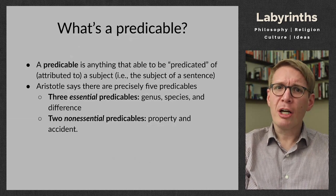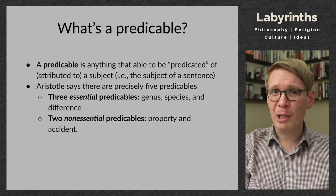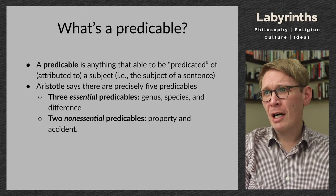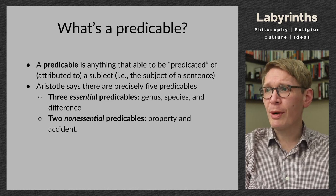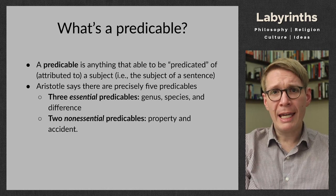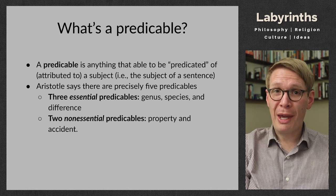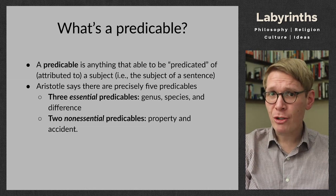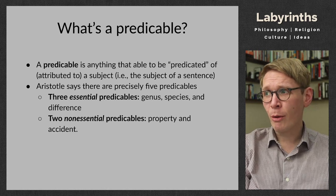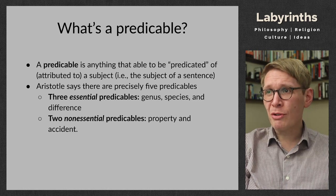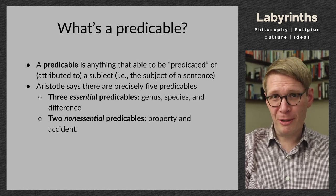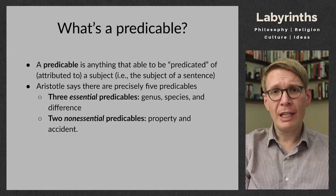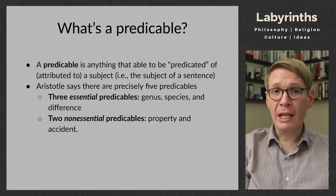So, what is a predicable? It's a strange nominal form of the verb to predicate, or the other noun form, a predication of something. A predicable is anything that is able to be predicated of — that is, attributed to — a subject. Aristotle, in his typical way, purports to provide an exhaustive catalog of the field. He thinks there are precisely five kinds of predicables: three essential predicables and two non-essential predicables.